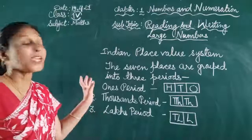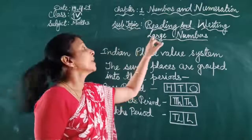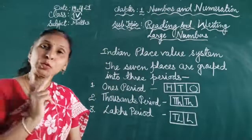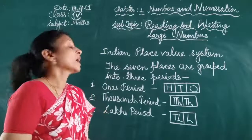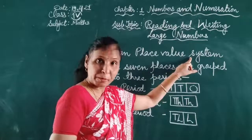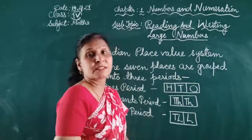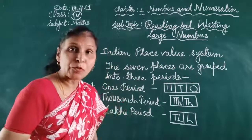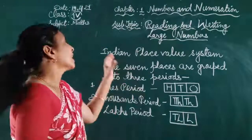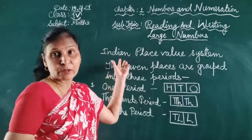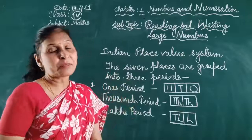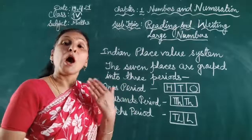Good morning dear students. Today I am going to explain reading and writing large numbers. You know there are two systems. The first is the Indian place value system, which you are familiar with. The other system, which is new for you, is the international place value system. The Indian place value system is used in India and the international place value system is used outside of India.